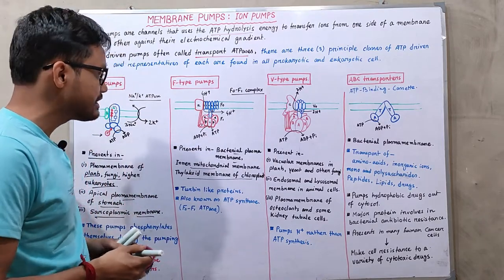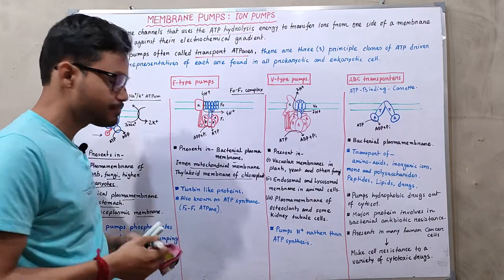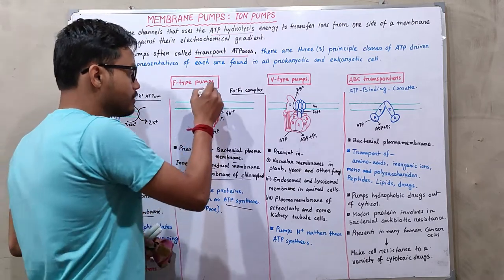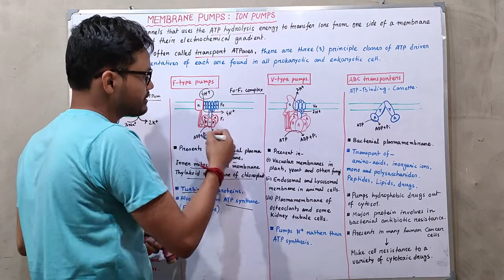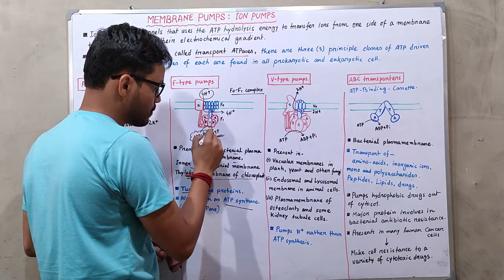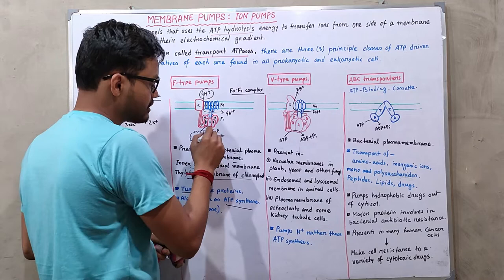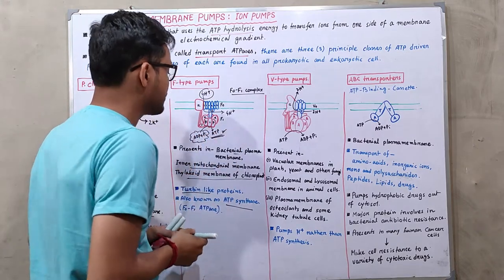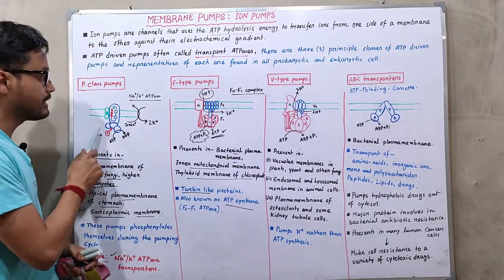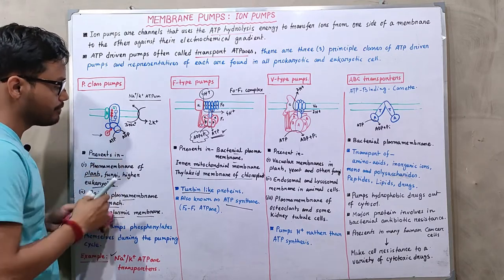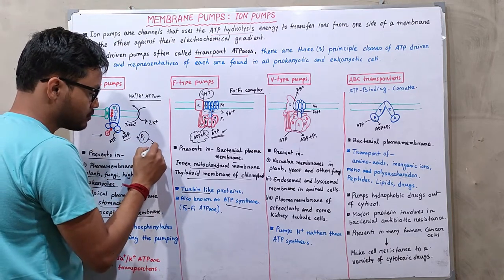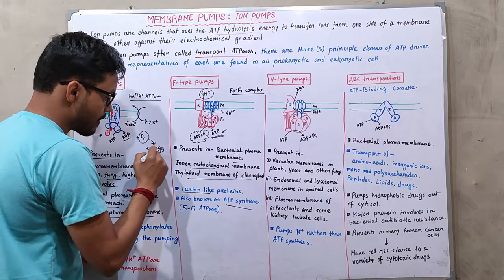F-type pumps are turbine-like proteins, also known as ATP synthase. Four hydrogen ions pass through this ATP synthase, driving the synthesis of one ATP molecule from ADP and one inorganic phosphate. In contrast, P-type pumps hydrolyze ATP — converting ATP into ADP and inorganic phosphate — and use that released energy as their power source.